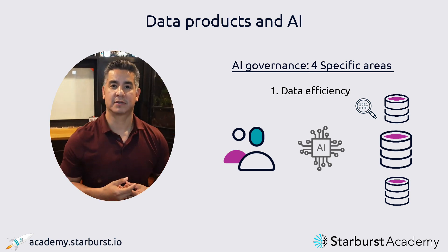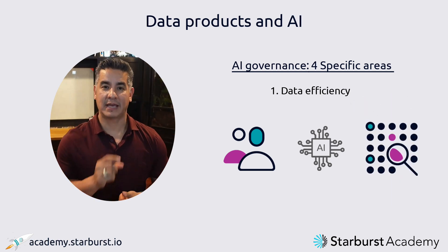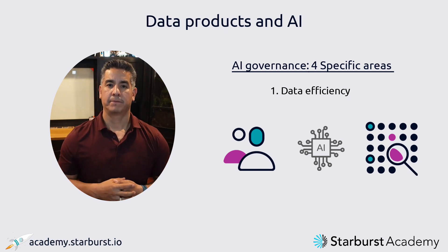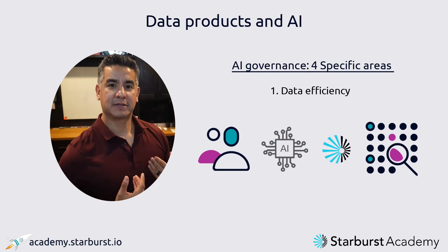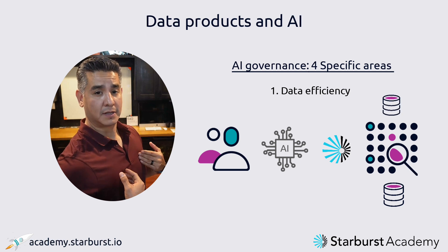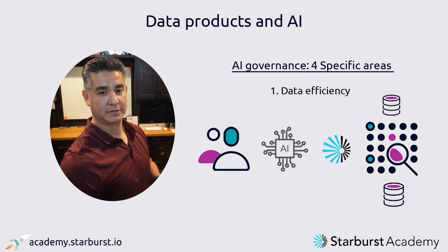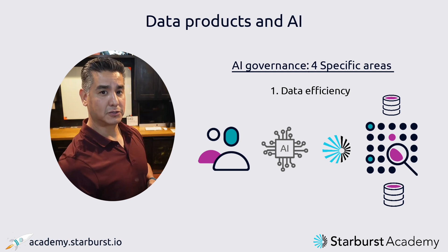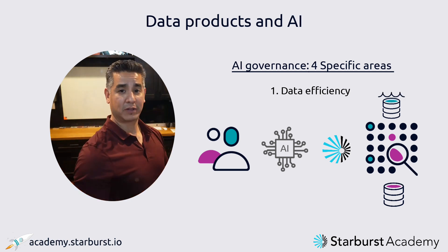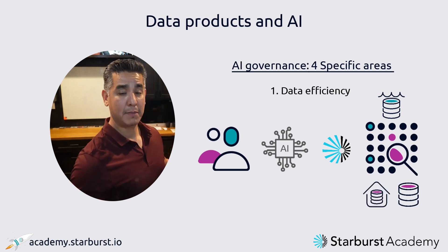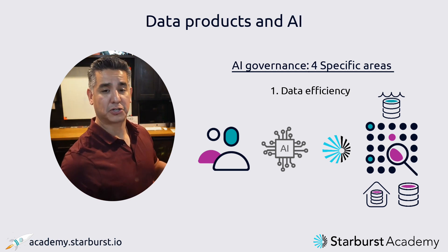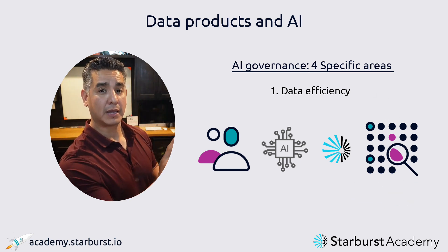What the governance team wants is data minimization — only move the data you need. From a Starburst perspective, what I want to do is give that data science team the perception that they can see all the data. I want to be the abstraction layer that allows them to discover through a back-end catalog all that data, no matter what lake it sits on, whether it's in multiple clouds, whether it's on-prem, or even in some other data sources — via secure channel.